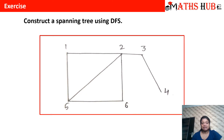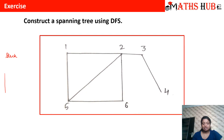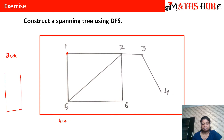We will find the depth first search by applying the DFS algorithm to find the spanning tree. We are going to use a method called the stack method. The stack is like an empty vessel where we pour in the vertices we are covering. Since nothing is given about where to start, we can choose any of the six vertices, but let us assume we are given to start from vertex one.